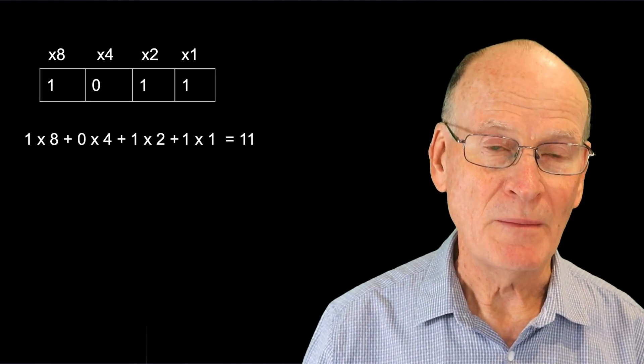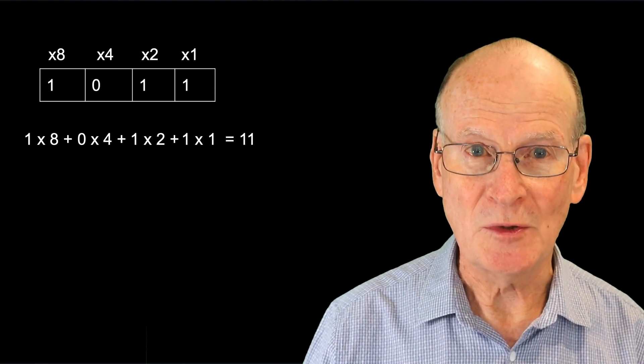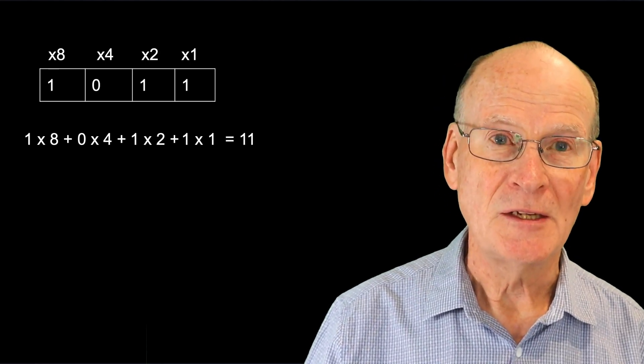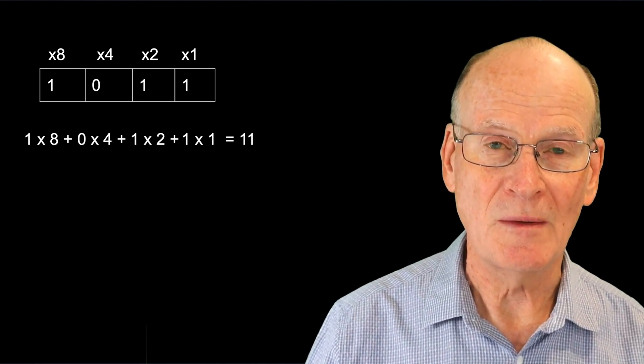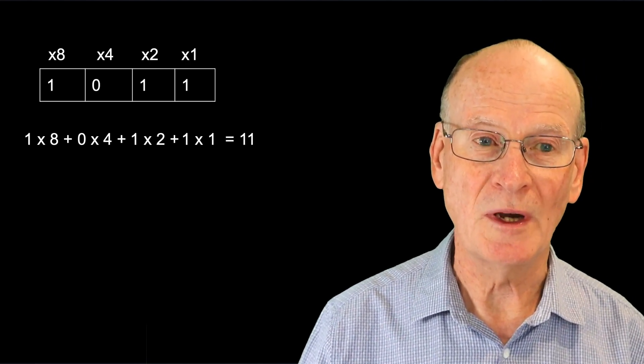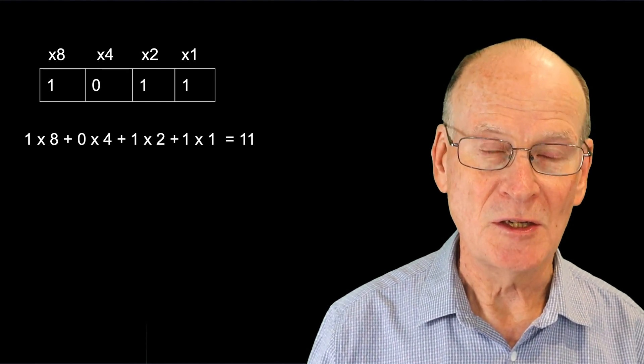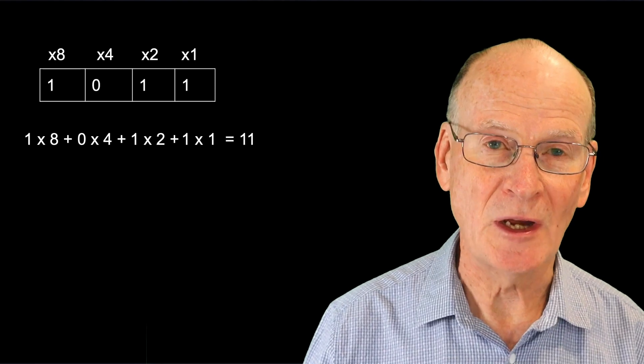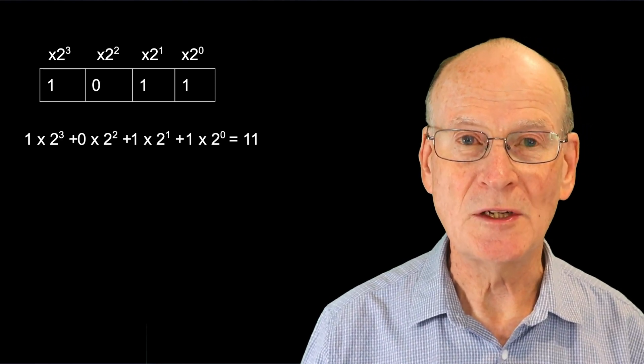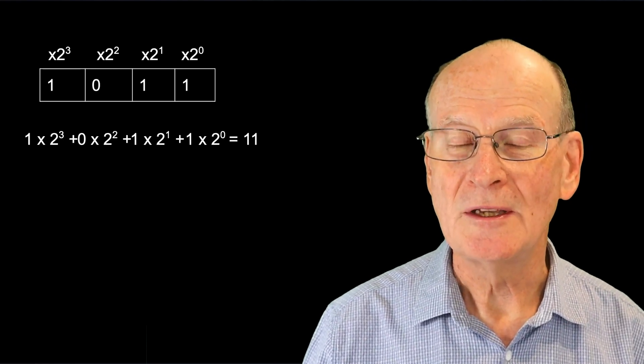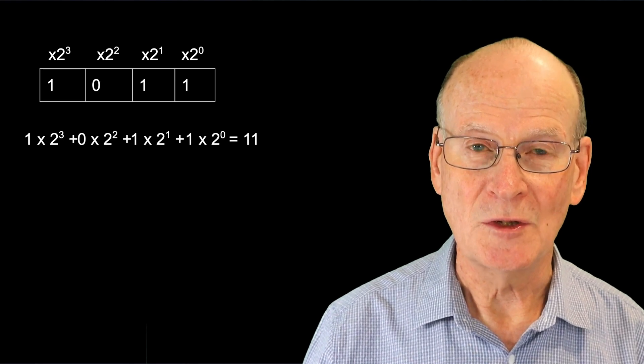So for the binary number 1011, each position is a power of 2. And so you can see here that the first position is weighted by 1, the next position by 2, then by 4, and then by 8. And so it's doubling each time, it's going up by a power of 2. So here we are. The first position is weighted 2 to the 0, the next 2 to the 1, then 2 to the 2, 2 to the 3, and so on, as you can see.